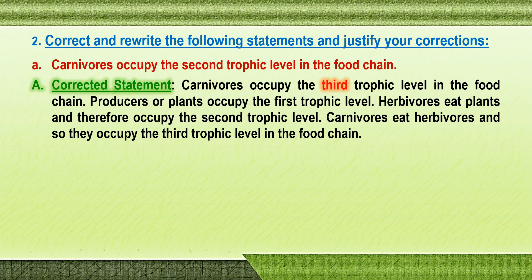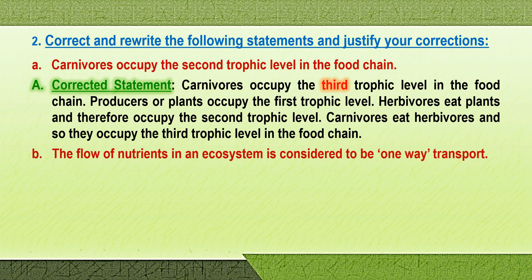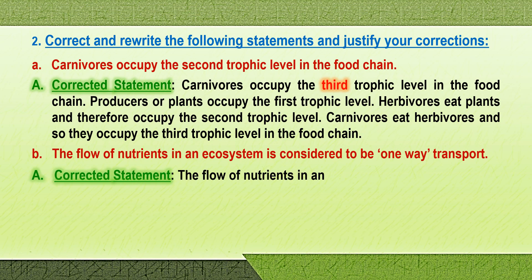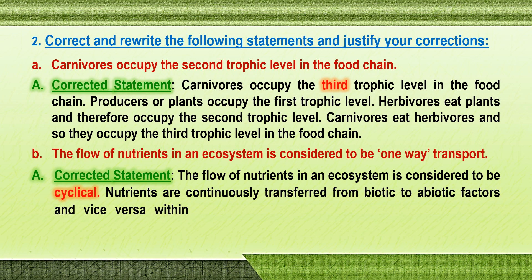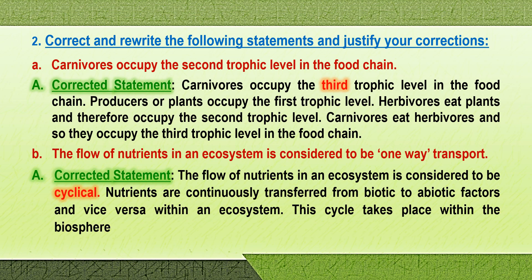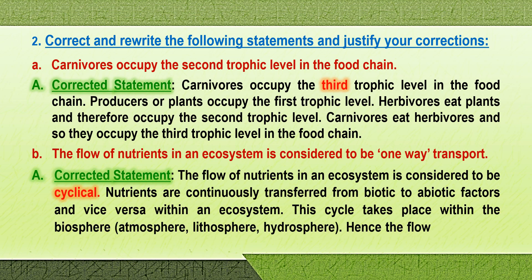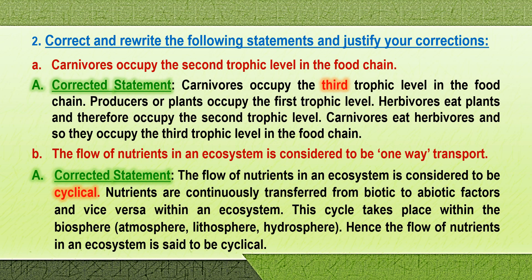Carnivores eat herbivores and so they occupy the third trophic level in the food chain. The second statement: the flow of nutrients in an ecosystem is considered to be one-way transport. Corrected statement: the flow of nutrients in an ecosystem is considered to be cyclical. Nutrients are continuously transferred from biotic to abiotic factors and vice versa within an ecosystem. This cycle takes place within the ecosystem, which is made up of the atmosphere, lithosphere, and hydrosphere. Hence the flow of nutrients is said to be cyclical — from living to non-living and back.